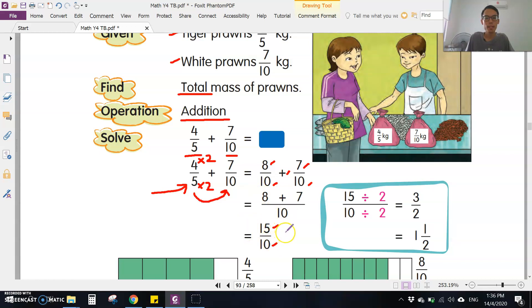This is an improper fraction, pecahan tidak wajar, so you have to change to proper fraction. You can simplify. I think there's a mistake here - this should be 5, because they are both in 10. Divide by 5, so 15 divided by 5 is 3, 10 divided by 5 is 2. This is 3/2.